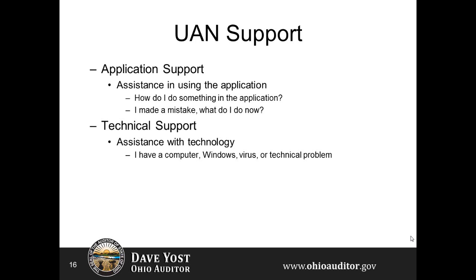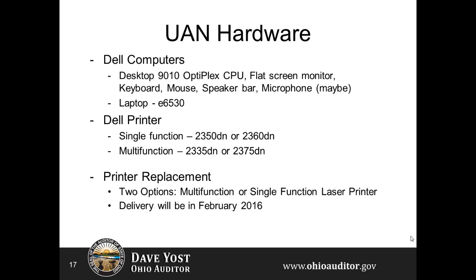This is the UAN hardware you should be receiving from the current fiscal officer — either a laptop or a desktop which consists of the CPU, monitor, full-size keyboard, and mouse, plus a printer, either single function or multi-function which provides fax, copying, and scanning functions. UAN cycles through computer and printer hardware roughly every four years, and a printer hardware replacement is coming in February 2016. Tentatively, there will be a computer hardware replacement in the summer of 2017 where you'll be able to choose between a desktop and a laptop.